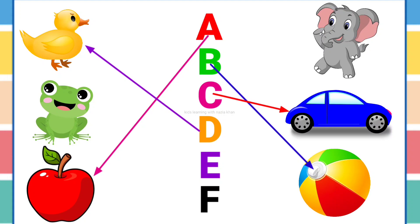D is for duck. D, D, duck. E is for elephant. E, E, elephant. F is for frog. F, F, frog.